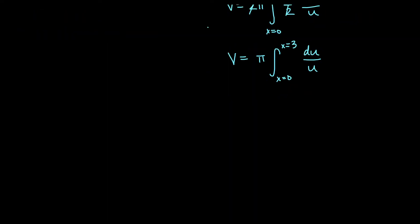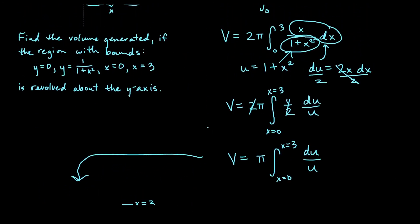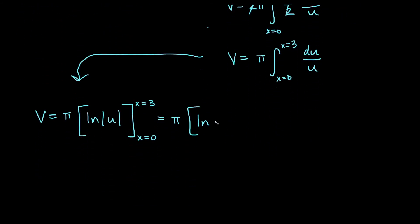Let's say volume is π times the natural log absolute value of u. Remember these are still x bounds, from x equals 0 to x equals 3. If I go back now and replace, u was 1 plus x squared. If we plug that in, I don't need my absolute value brackets because 1 plus x squared is not ever going to be negative.